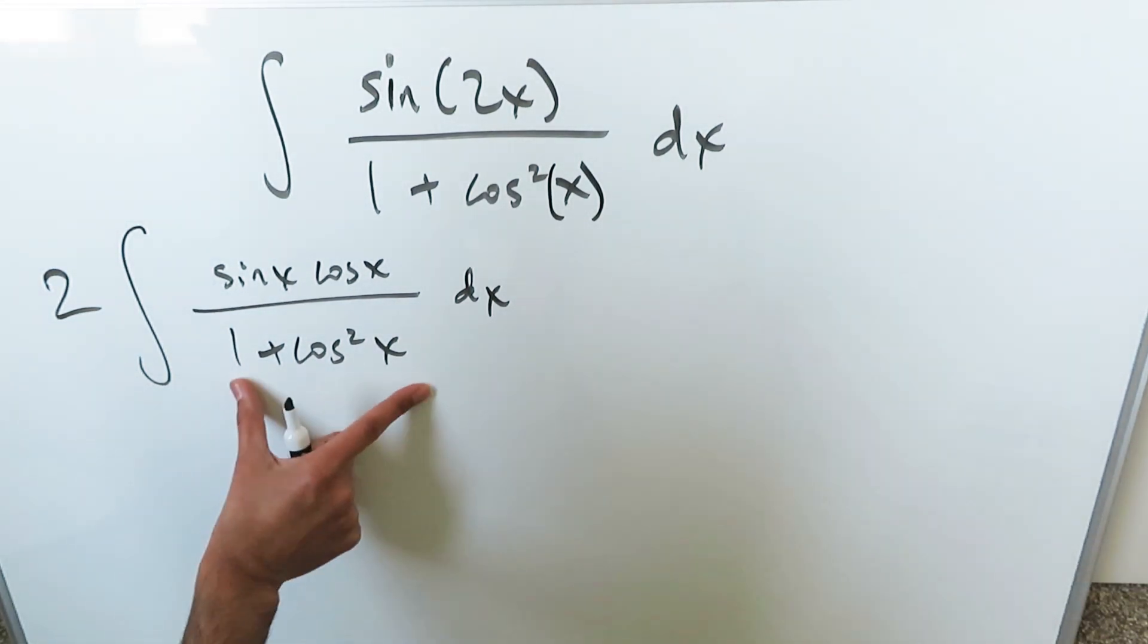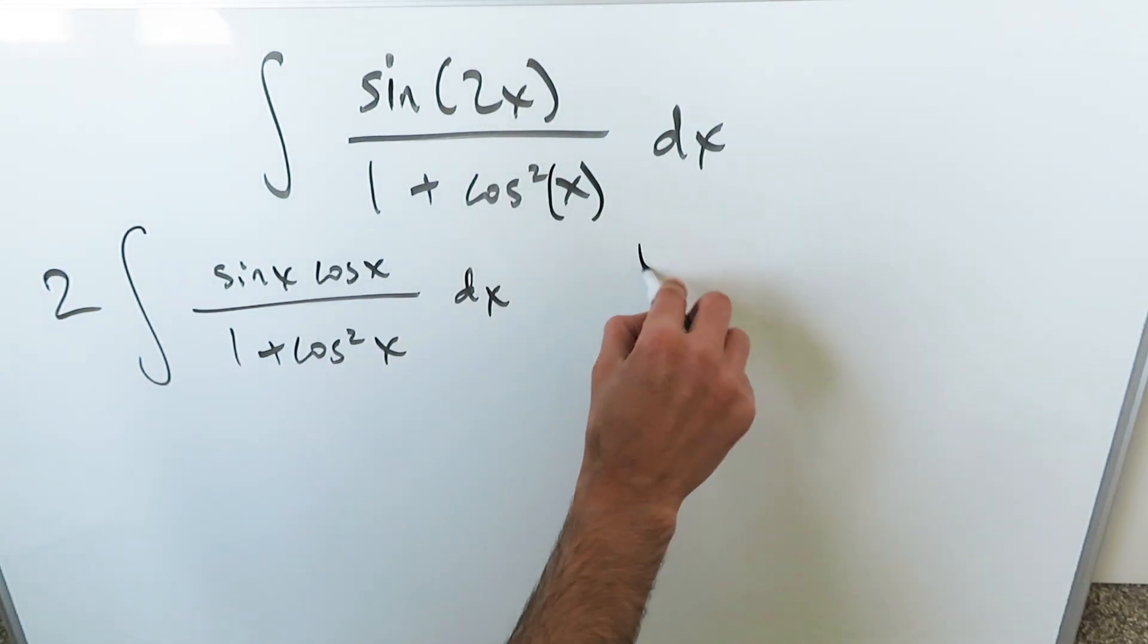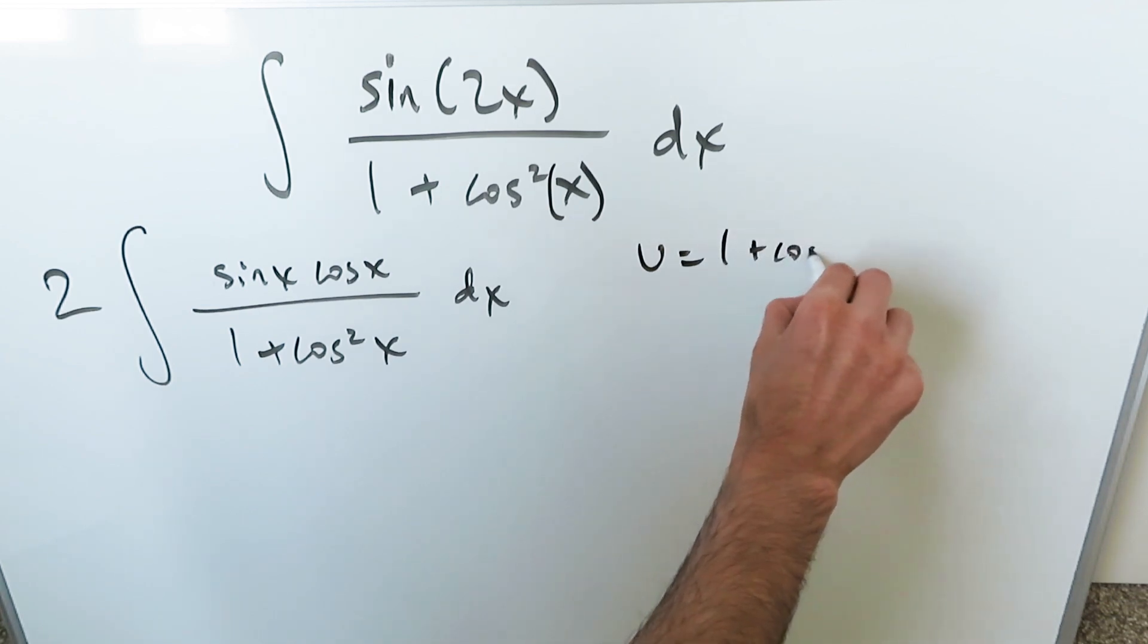You will do a u substitution but the entire denominator will be your item. u is equal to 1 plus cosine squared x. You have to do the derivative of this. You can do the chain rule.